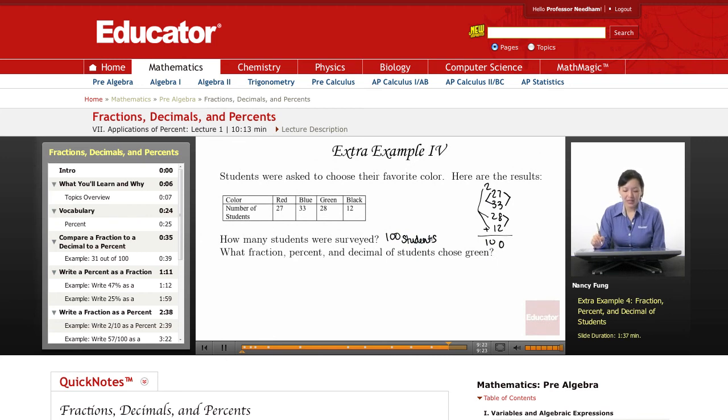What fraction, percent, and decimal of students chose green? So the fraction that chose green was 28 out of a hundred, which I could divide by four, the top and divide the bottom by four, and I will get seven out of 25. So seven out of 25 chose green when the fraction is simplified.